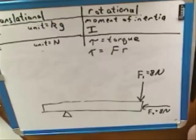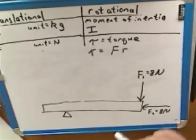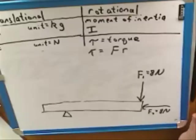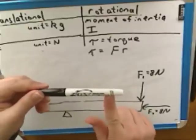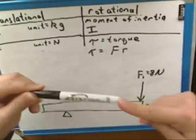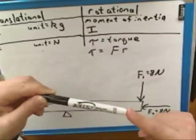Which of these forces can cause a rotation — F1 or F2, or both? F1. Again, this is just common sense. It should be common sense that you can't cause a rotation by pushing parallel to the object. F2 is just pushing parallel to the object, so that can't cause any rotation. Pushing perpendicular to the pen causes a rotation, but pushing parallel to the pen cannot cause any rotation. So only a perpendicular push can cause rotation, not the parallel push.